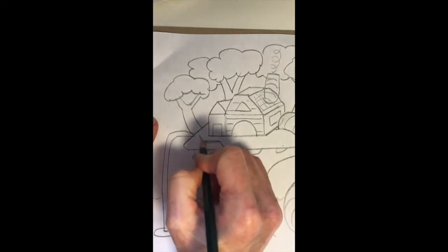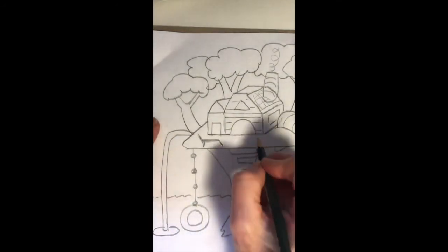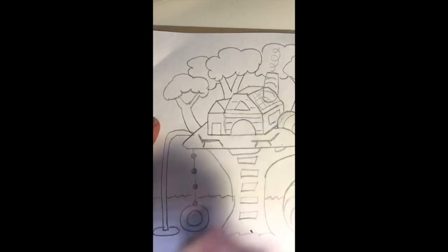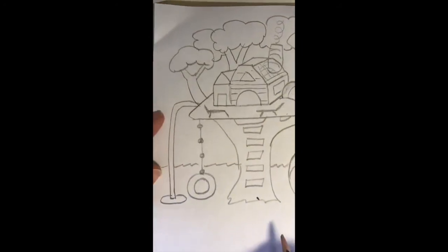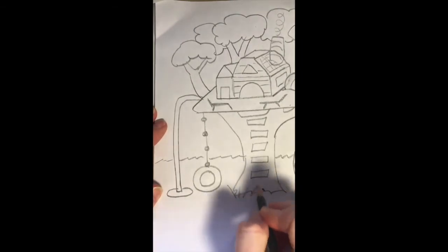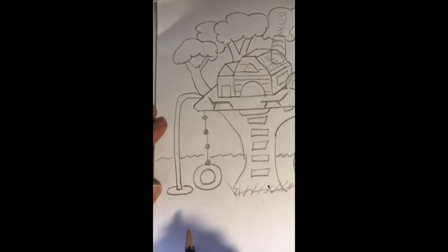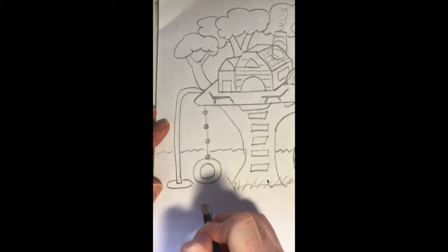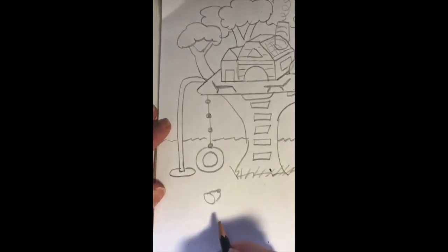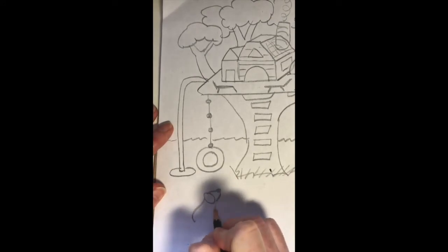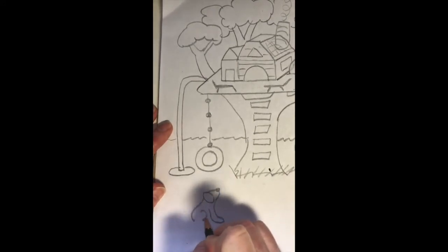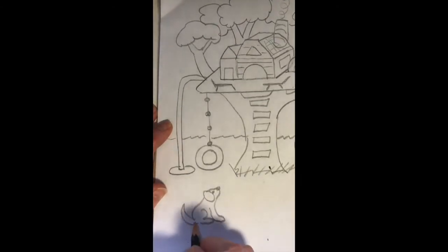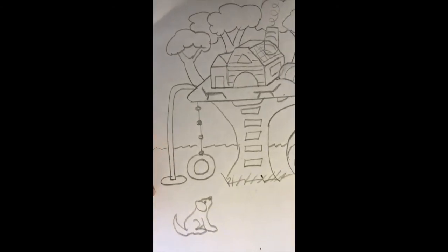These will be lounge chairs when I want to lay out in the sun on my porch. There, so be creative and try to think of fun ideas of things you can add. Some grass. You know, maybe I'll make my dog down here waiting for me to come out of the house. There's his ear and his face. And there's tail. There, he's anxiously awaiting me to come down from the treehouse.